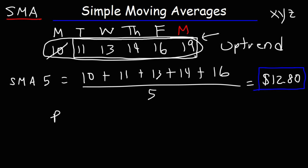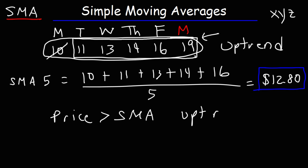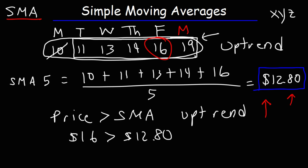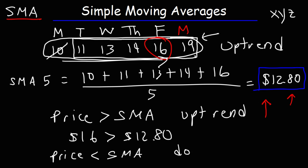Anytime the price is above the simple moving average, the stock is in an uptrend. On Friday, the closing price was $16, and the simple moving average was $12.80. So the price of $16 was greater than the moving average of $12.80, confirming the stock was in an uptrend. The reverse is true as well — if the stock price is less than the simple moving average, this indicates that the stock is in a downtrend. You can compare the stock price with the SMA to quickly identify the trend.